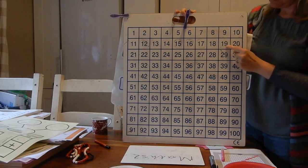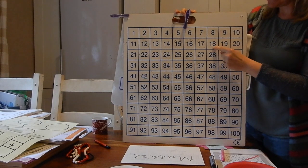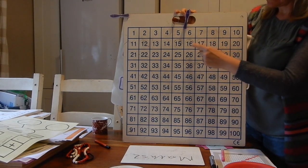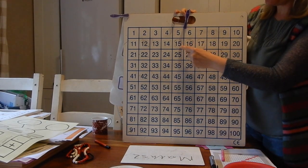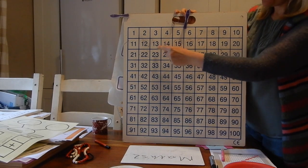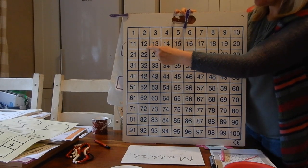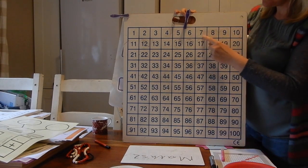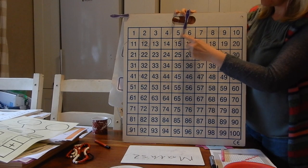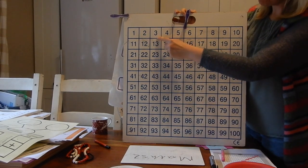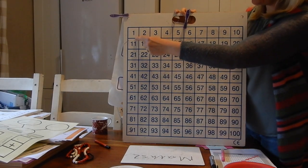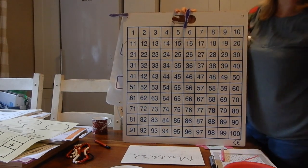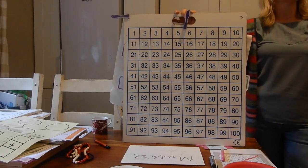20, 19, 18, 17, 16, 15, 14, 13, 12, 11, 10, 9, 8, 7, 6, 5, 4, 3, 2, 1 and 0. That's counting backwards. Excellent, in 1s.